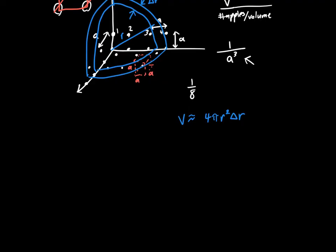Since this was the one apple per a cubed volume, it's a cubed volume per one apple. Or the total number of apples is just 4 pi r squared delta r divided by a cubed.